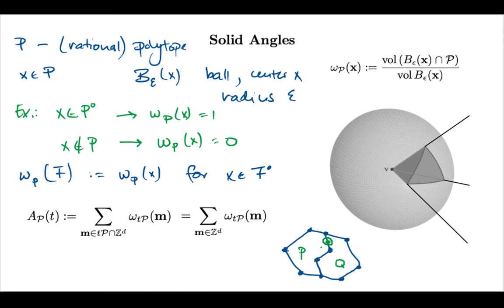But for now, there is another connection to Ehrhart quasi-polynomials. It follows from the fact that the solid angle over faces are invariant. And what this means is that we can measure each angle at a face and then multiply this by the number of integer points on the interior of this face.